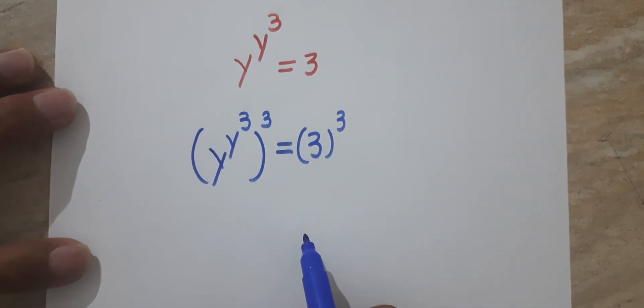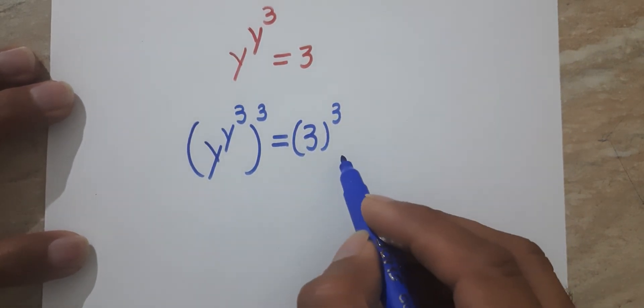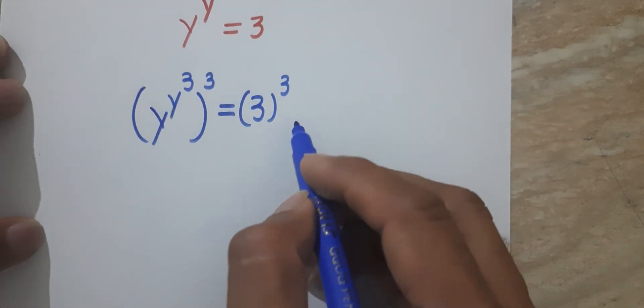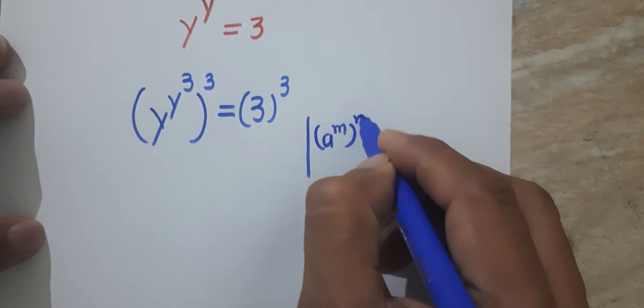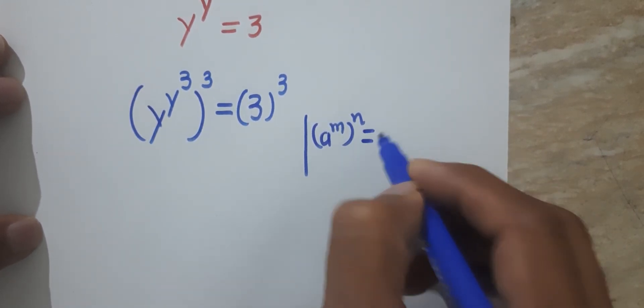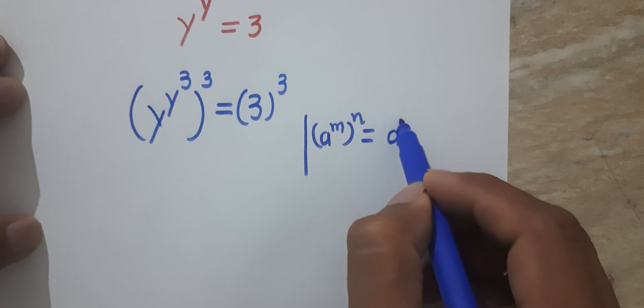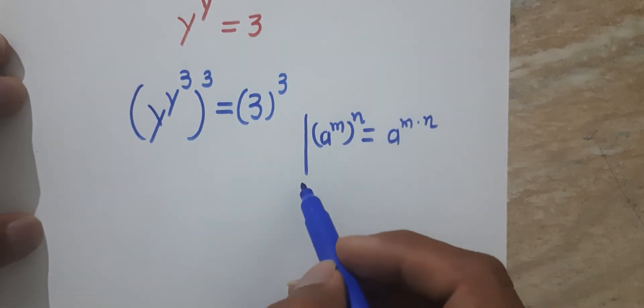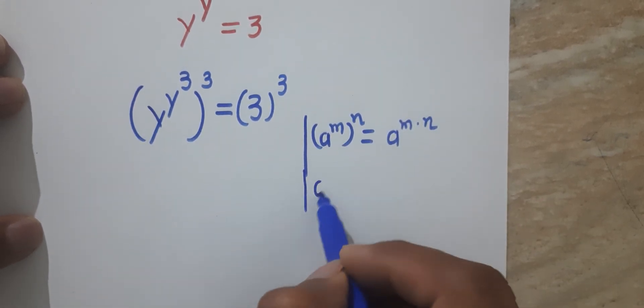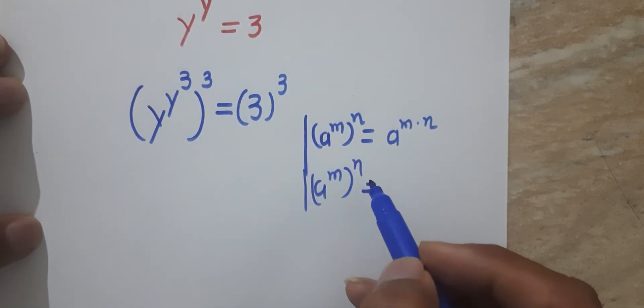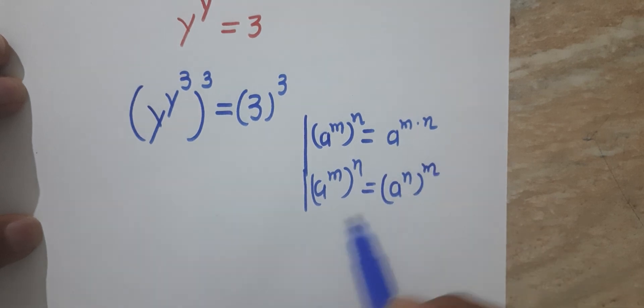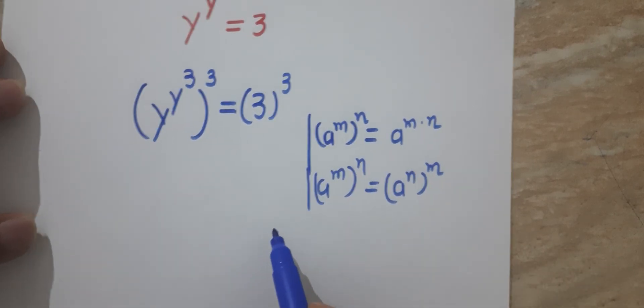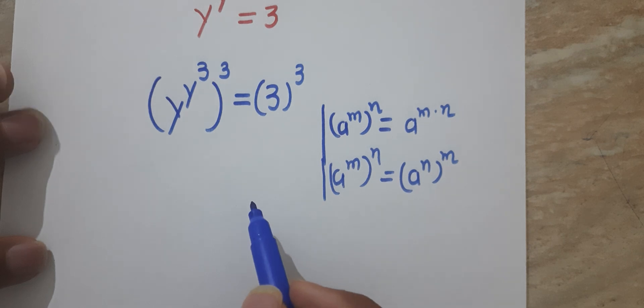Here we have to apply some rules. We know that (a^m)^n = a^(m·n). Also another rule to remember is (a^m)^n = (a^n)^m. We can write it like this. We have to apply these rules here.